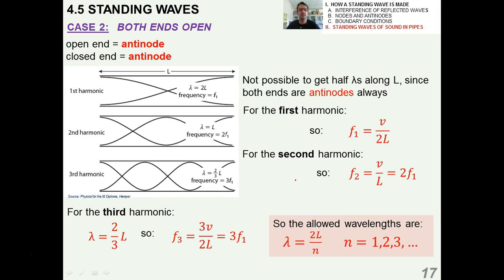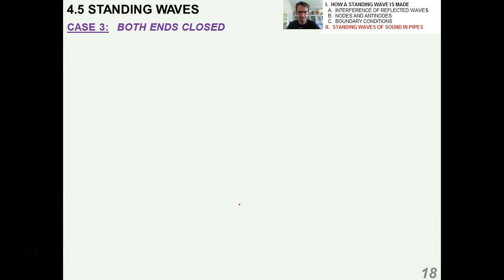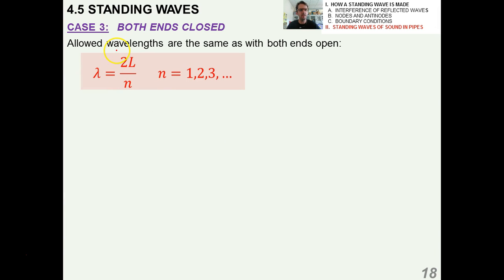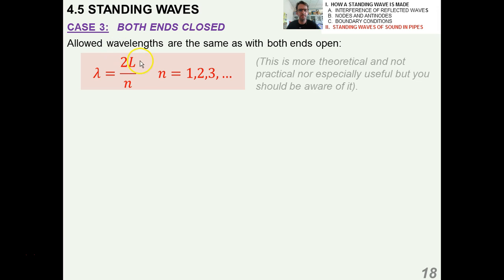The allowed wavelengths for when both ends are open is 2L over n, where n is any non-zero positive integer. It turns out that in case 3, where both ends are closed — which is an unrealistic, weird case because how would you ever get a wave to even enter? — it's the same physics, the same equation. The allowed wavelengths are the same as with both ends open. This is more theoretical and not super practical, but you should be aware of it.